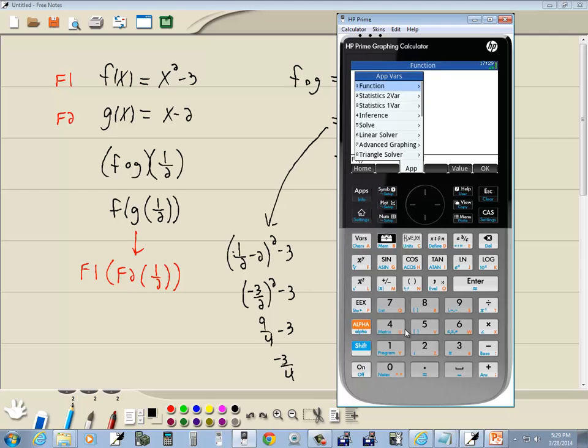And now we want to choose f2. So I'll go back to vars, choose function, press 1 for function, press 2 for symbolic, and then I'll press 2 for f2. I'm starting to look close, and then I'll do parentheses. And then I'll do 1 divided by 2. And you see that looks like our notation here, doesn't it?